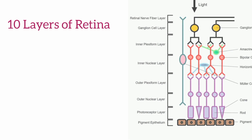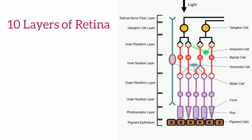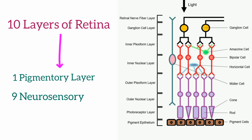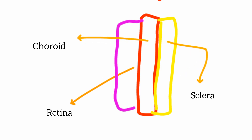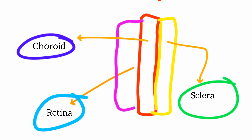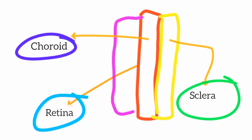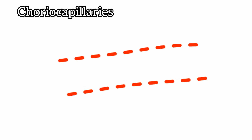The retina has ten layers — one is the pigmentary layer and the other nine are the neurosensory layers of the retina. The retina is a transparent structure. The structures surrounding the retina are the choroid and sclera. The outermost structure is the sclera, then we have the choroid, and then we have the layers of the retina, so the retina is in direct contact with the choroid.